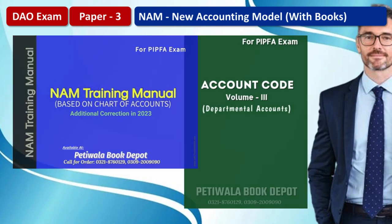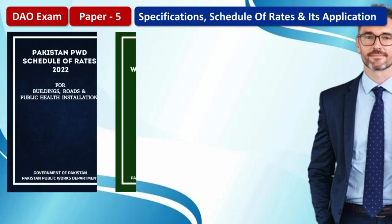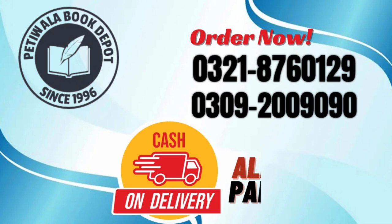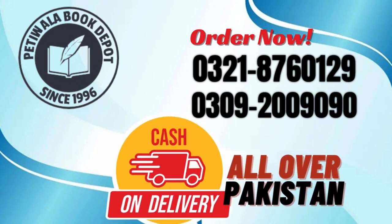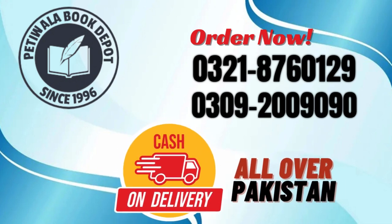Paper 5: Specifications, Schedule of Rates and its Application, PWD Schedule of Rates. In Paper 5 students face some problems. 60% of the paper belongs to the Federal Government and 40% belongs to the Provincial Government. So students must prepare both Federal and Provincial Schedule of Rates plus Specifications.